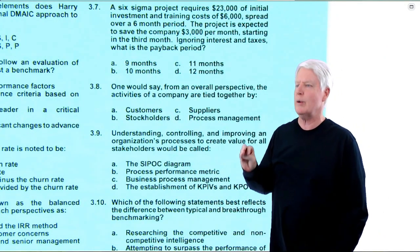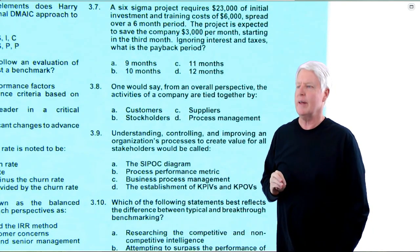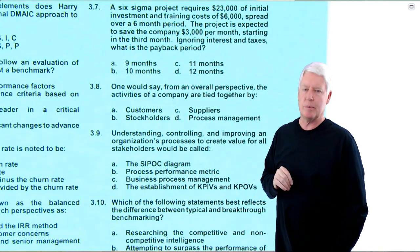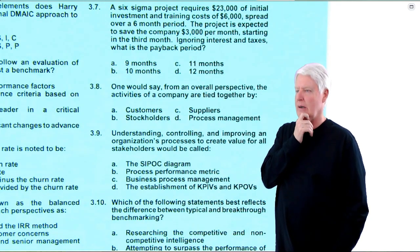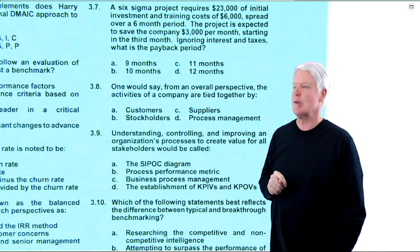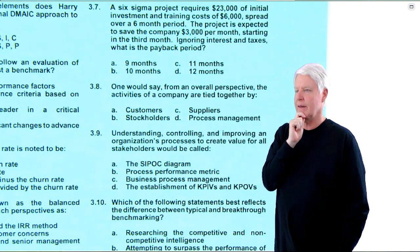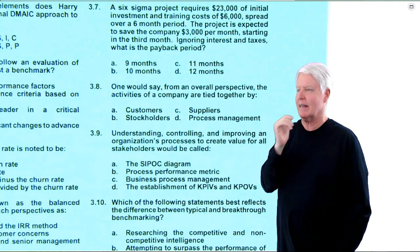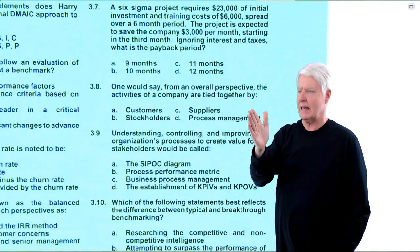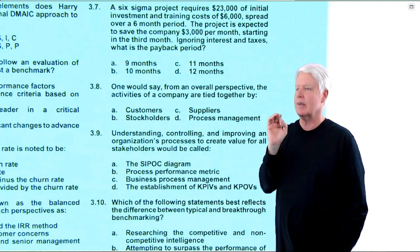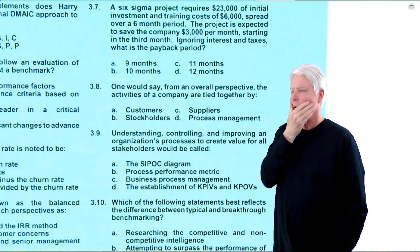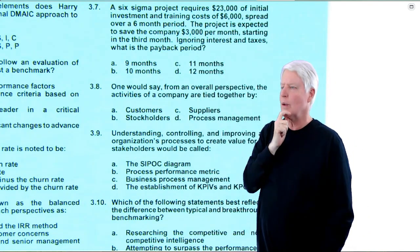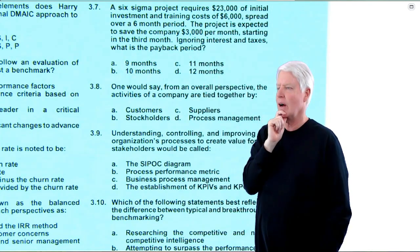Here is question 7. A Six Sigma project requires $23,000 of initial investment and training costs of $6,000 — so $29,000 invested total — spread over a six-month period. The project is expected to save the company $3,000 per month starting in the third month. Ignoring interest and taxes, what is the payback period? In other words, how long to get that $29,000 back at $3,000 a month?